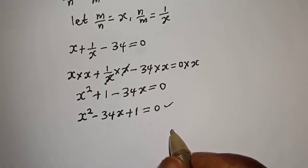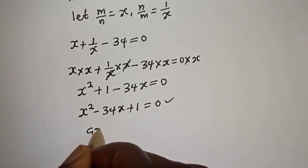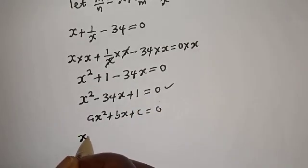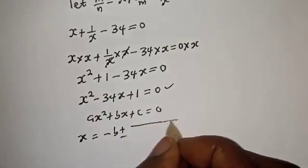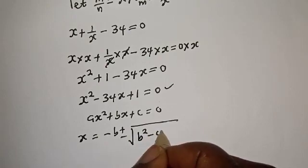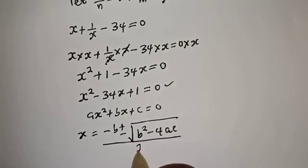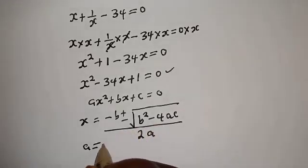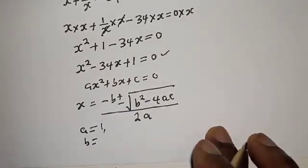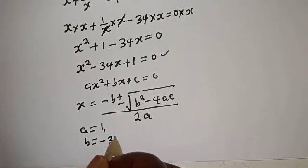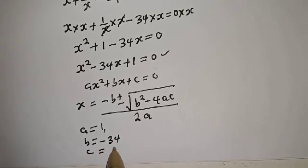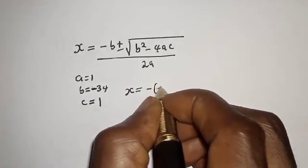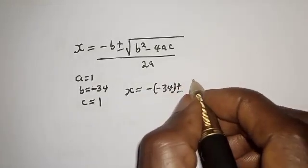This can be solved using the quadratic formula. For a general equation as squared plus bs plus c equals zero, s equals negative b plus or minus square root of b squared minus 4ac, all over 2a. From our equation, a equals 1, b equals negative 34, and c equals 1.